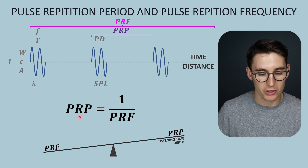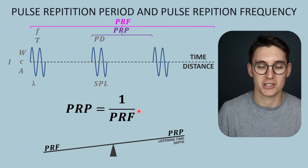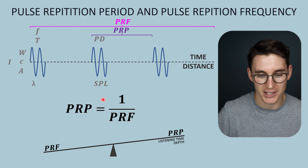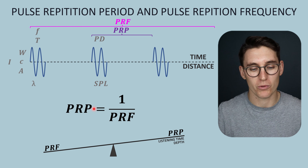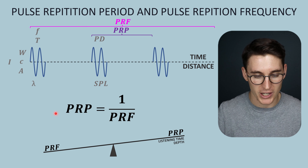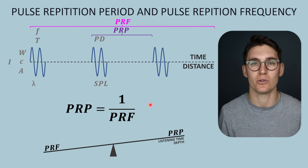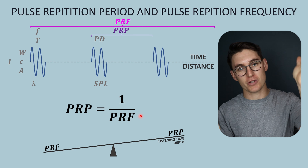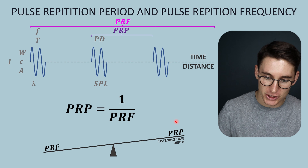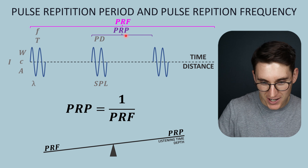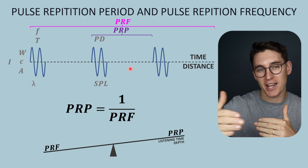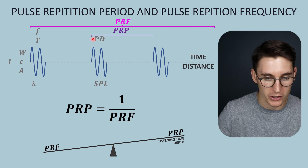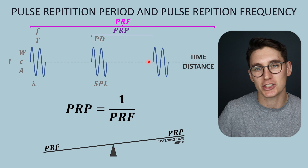We can calculate our pulse repetition period if we're given our pulse repetition frequency. The way I like to think of this is as a see-saw between pulse repetition period and pulse repetition frequency. As our pulse repetition period increases — as this time gets longer — we can image a further and further depth. The depth in our image increases because we've got more receive time. Remember we're not changing this pulse duration, we're only changing the receive time.